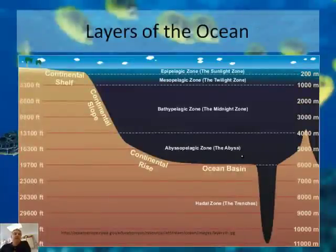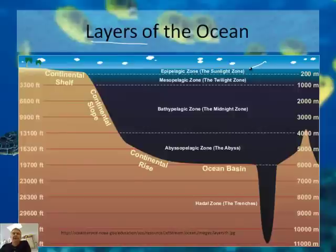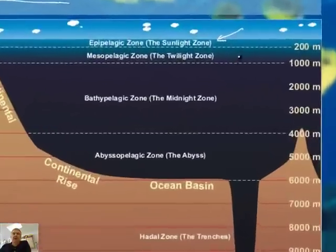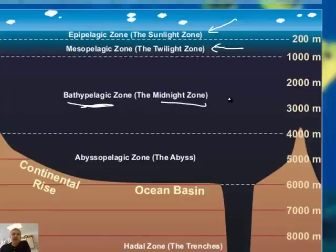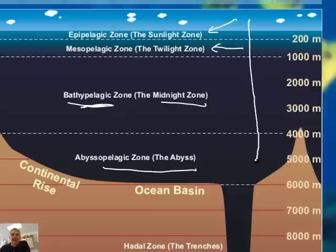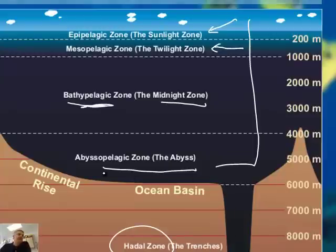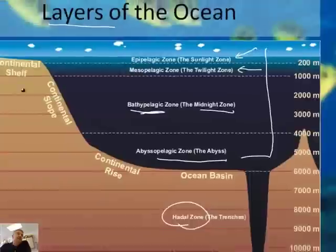Let's talk about the layers of the ocean. It turns out the ocean has layers. The top layer is the sunlight zone, you can kind of see it right here. Then we have the twilight zone — that means it's dark but not super dark. And then in the bathypelagic zone, it's dark. The midnight zone means it's just dark. And the abyssal zone. So there are four main layers, and then we've got the hadal zone, which is out in the trenches.